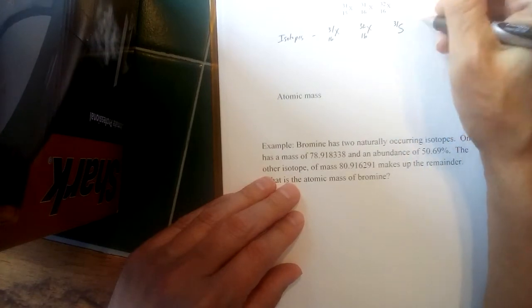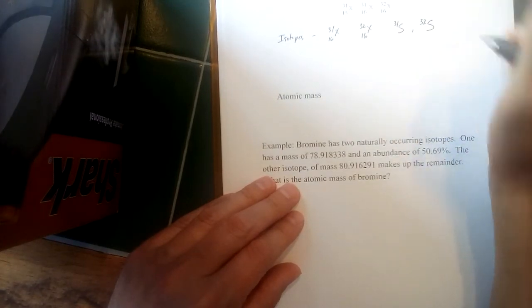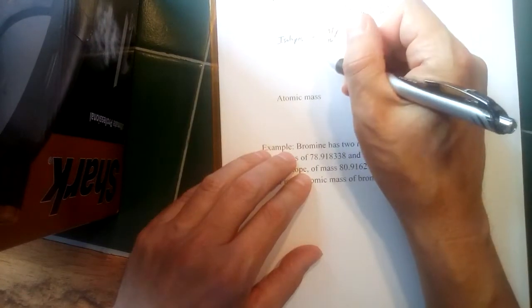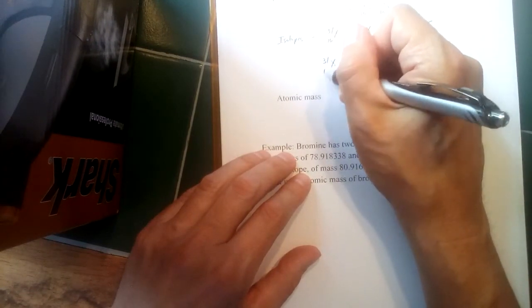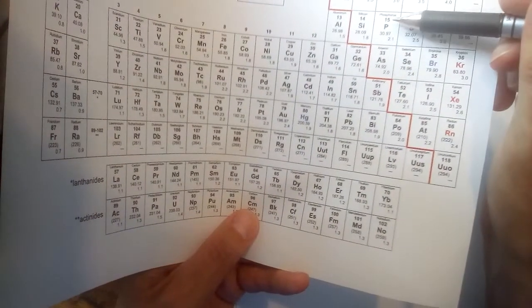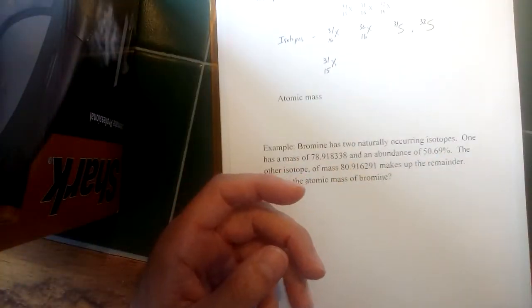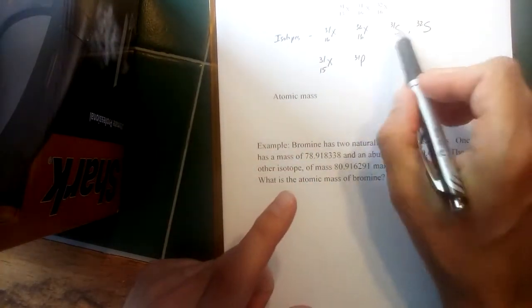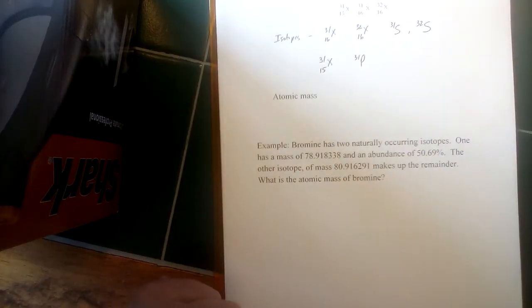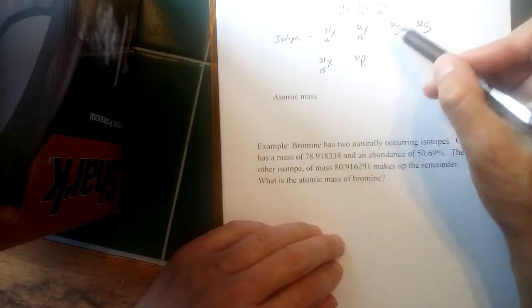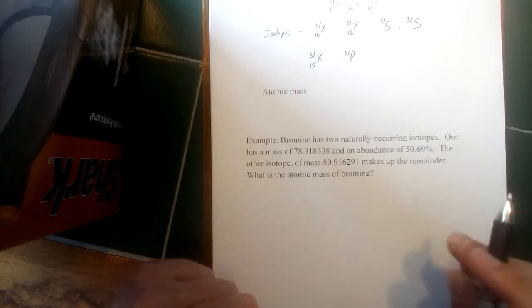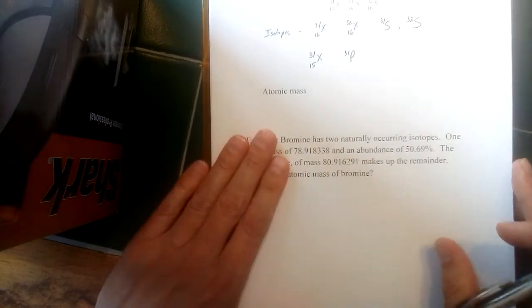So this would be sulfur-31 and sulfur-32, the two isotopes of sulfur. Now, the other element listed here with 15 as its atomic number, that's an atom of phosphorus. In the periodic table, we can find that atomic number and link it to the symbol, so this is phosphorus-31. So the sulfurs are isotopes; the phosphorus is a completely different element. The fact that one of the sulfurs has the same mass number as the phosphorus is really just a coincidence. It doesn't imply anything about any sort of chemical properties.